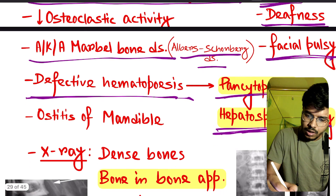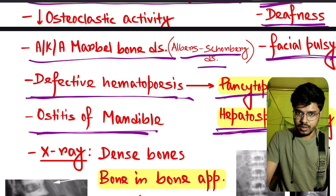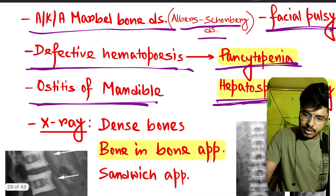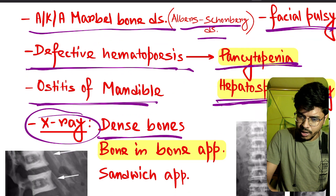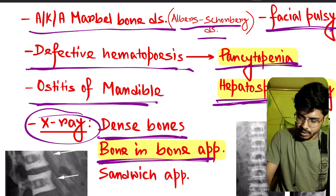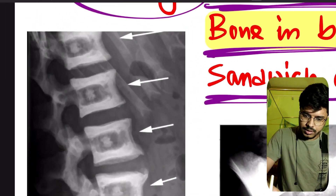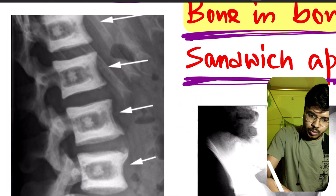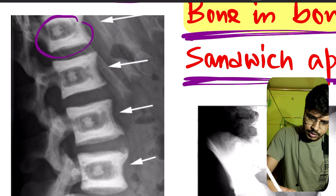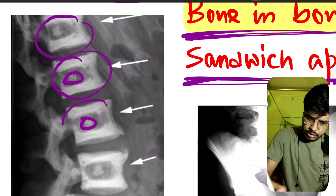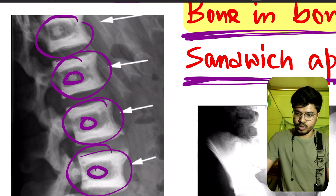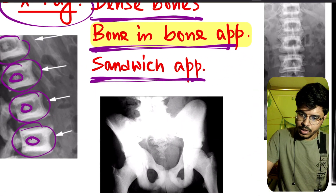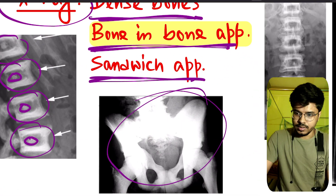There is osteitis of the mandible. The X-ray features are important: dense bone appearance, bone-in-bone appearance, and sandwich appearance.